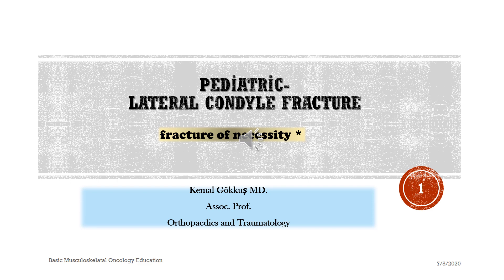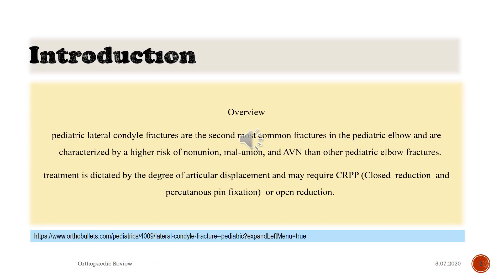Lateral Condyle Fracture in Child — Fracture of Necessity. Pediatric lateral condyle fractures are the second most common fractures in the pediatric elbow and are characterized by a higher risk of nonunion, malunion, and AVN than other pediatric elbow fractures. Treatment is dictated by the degree of articular displacement and may require CRPP, closed reduction and percutaneous pin fixation, or open reduction.